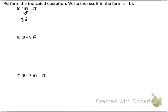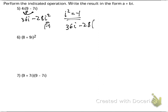4i times 9 is 36i. 4i times negative 7i is negative 28i squared. But remember, i squared equals negative 1. So this here is negative 1. So I'm going to have 36i minus 28 times negative 1. This will give me positive 28. So finally, we will have 28 plus 36i if I write it in that form.